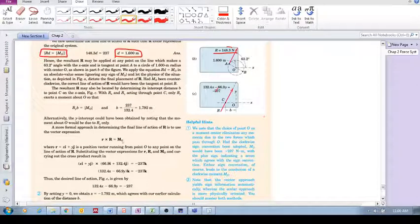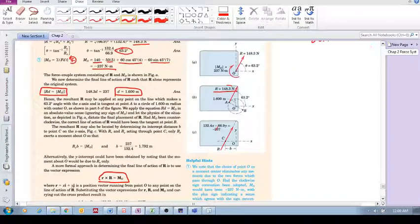Well we know that MO, that resultant couple, this resultant couple moment in vector form is R cross R where R is any position vector from point O to any point along the line of action of this force. Please remember that, any point along the line of action.